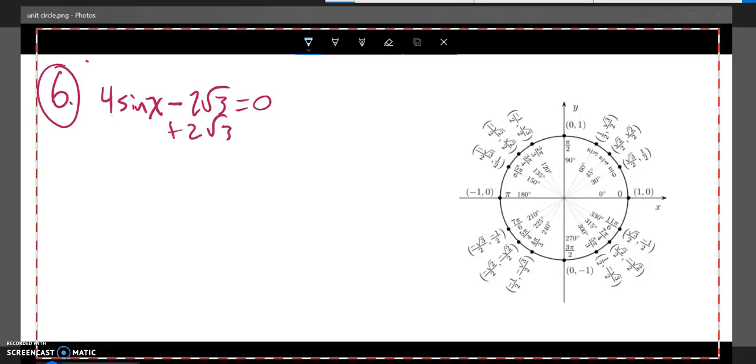So I'm going to add 2 root 3 to both sides. And if I get that, I've got 4 times sine x equals 2 root 3.